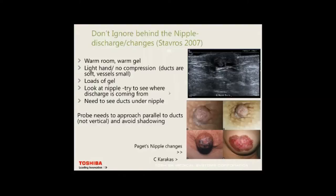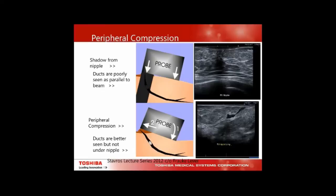Don't ignore behind the nipple. Stavros recommends a warm room and warm gel, using a light hand with no compression because ducts are soft and vessels are small. We look at people with nipple changes or discharge — these are examples of Paget's disease of the breast. Try and look at the nipple, work out where the discharge is coming from, and look for all the ducts under the nipple. You want to be parallel to the ducts, not vertical, and avoid shadowing from the nipple. Most will look from above and use a peripheral compression technique to get parallel to the ducts.